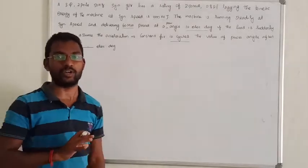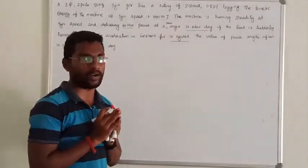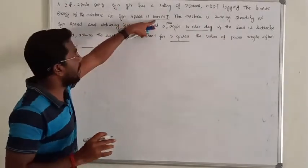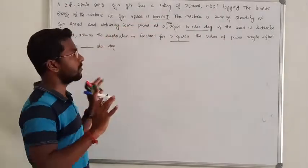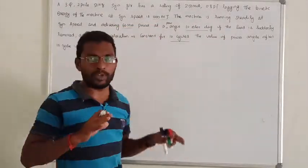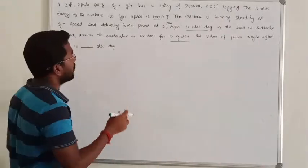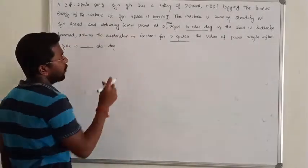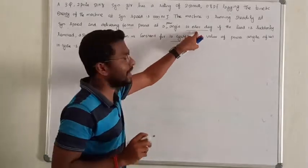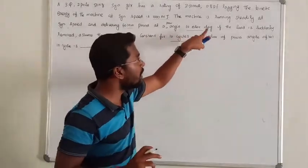First, the initial system has 250 MVA at 0.8 power factor, developing kinetic energy of 1000 MJ. Everything is in steady state. In steady state, the power is 60 MW and the initial electrical angle — the load angle — is 10 degrees.